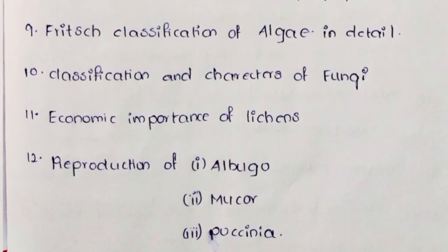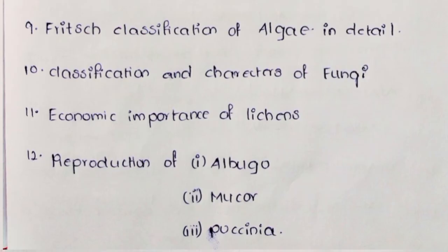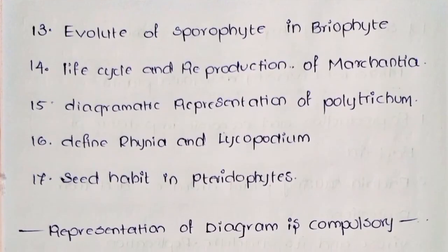Twelfth continued — Mucor, third: Puccinia. Thirteenth: Evolution of Sporophyte in Bryophytes. Fourteenth: Life Cycle and Reproduction of Marchantia. Fifteenth: Diagrammatic Representation of Polytrichum.